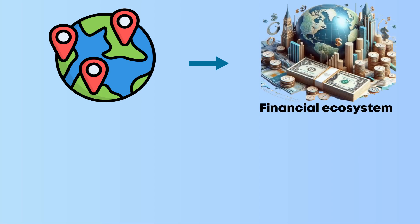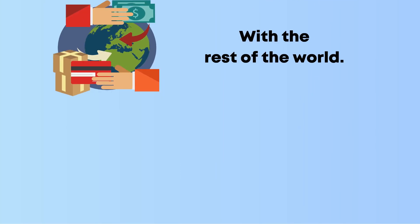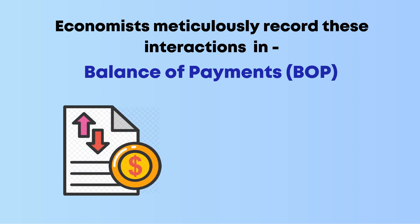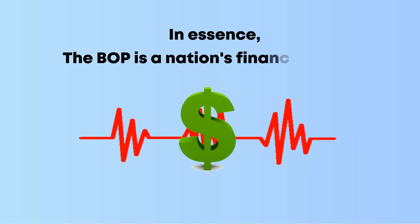Imagine a country as a vast financial ecosystem, continuously engaged in a complex web of economic transactions with the rest of the world. Economists meticulously record these interactions in the Balance of Payments, or BOP, a financial statement that narrates a nation's economic dealings with other countries. In essence, the BOP is a nation's financial pulse.